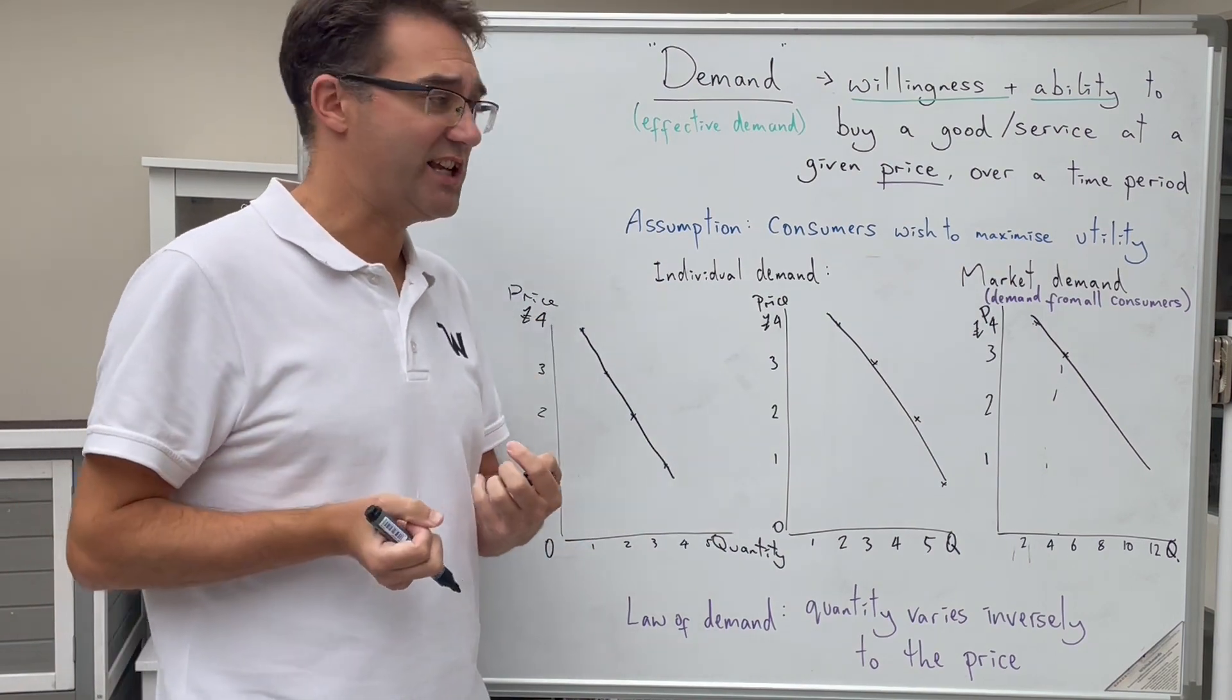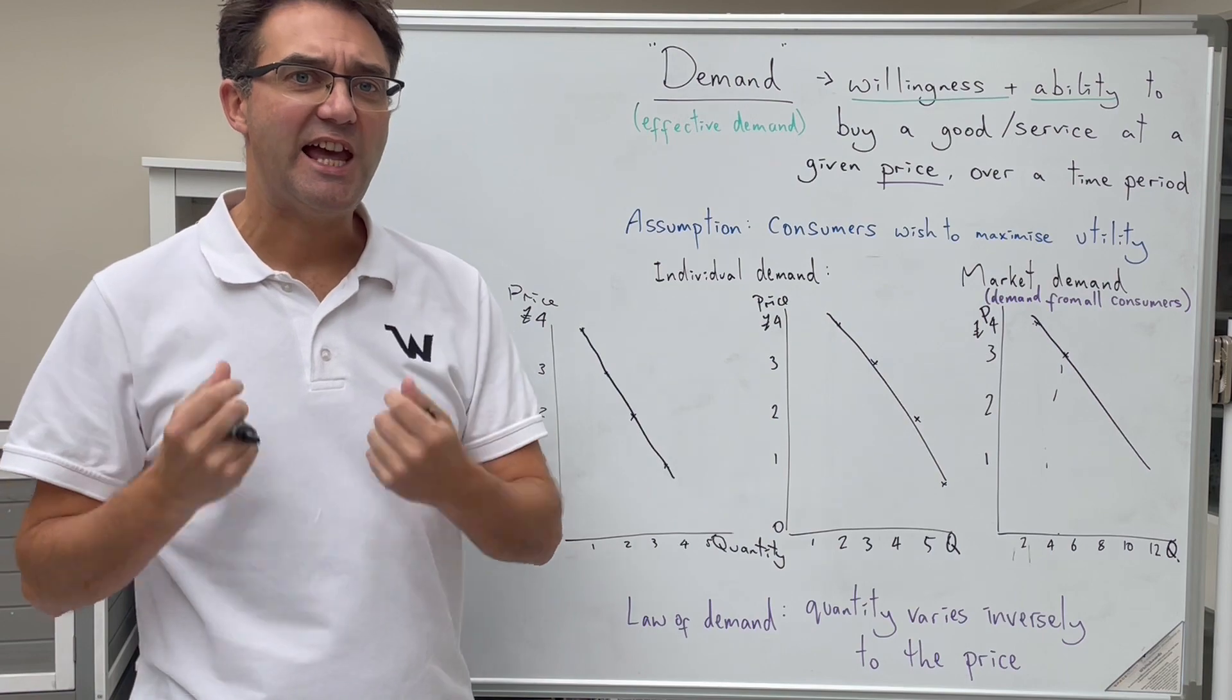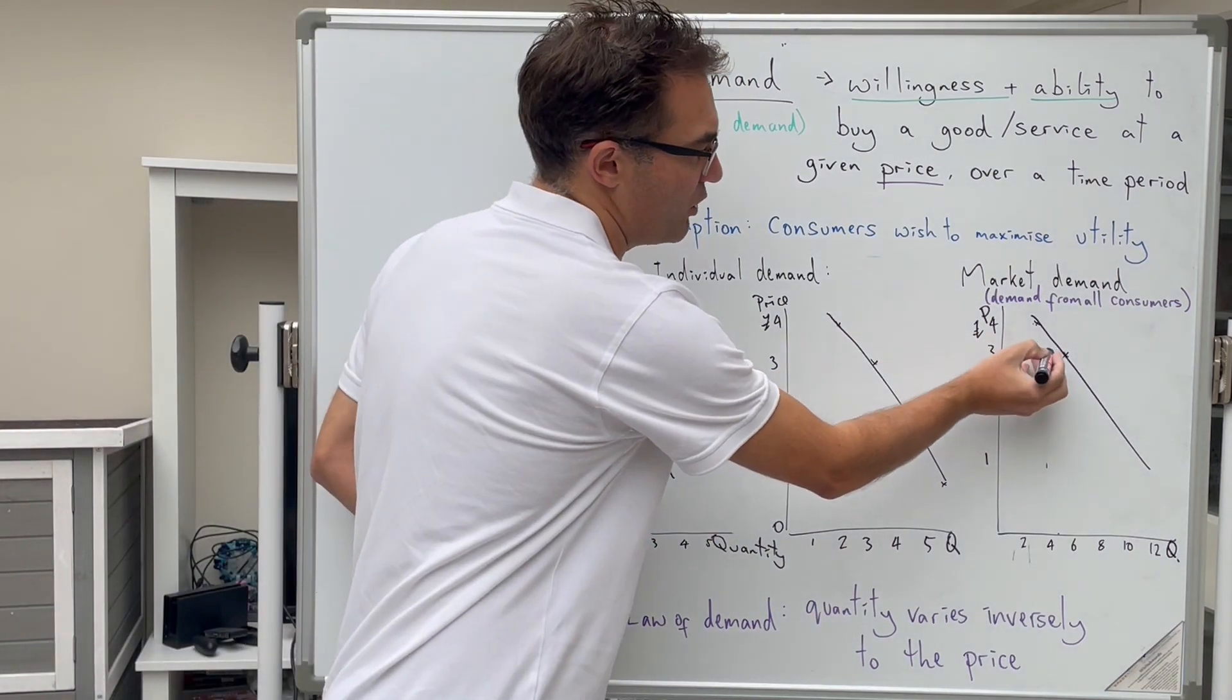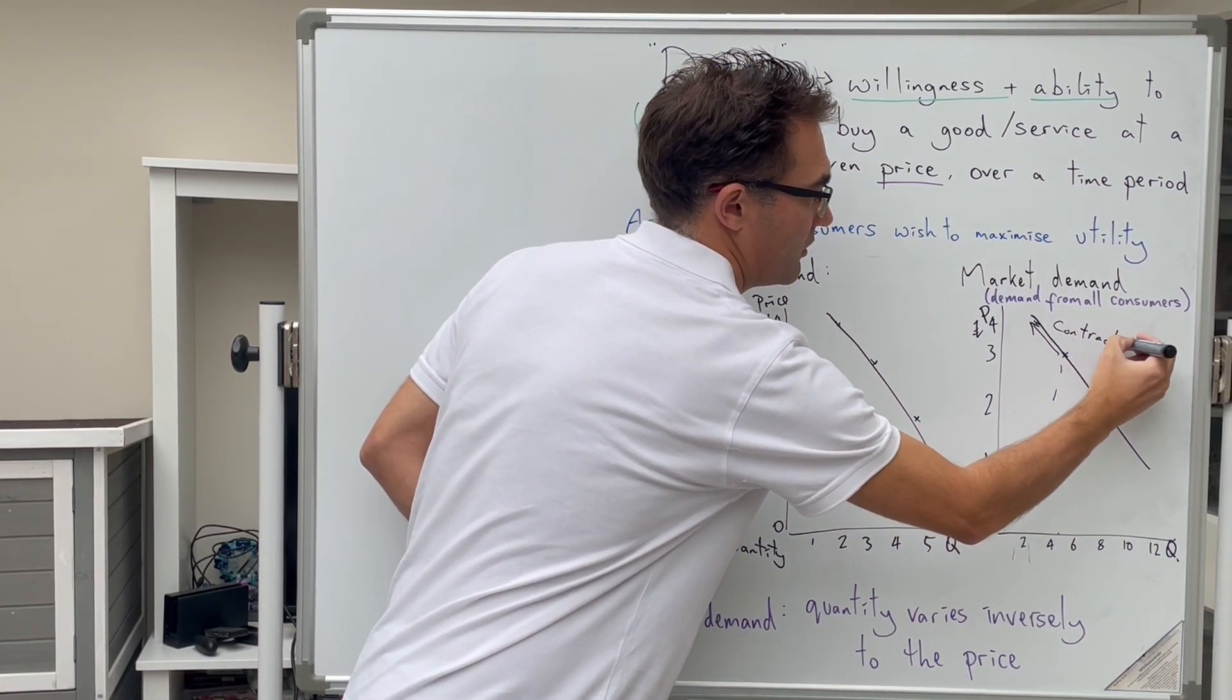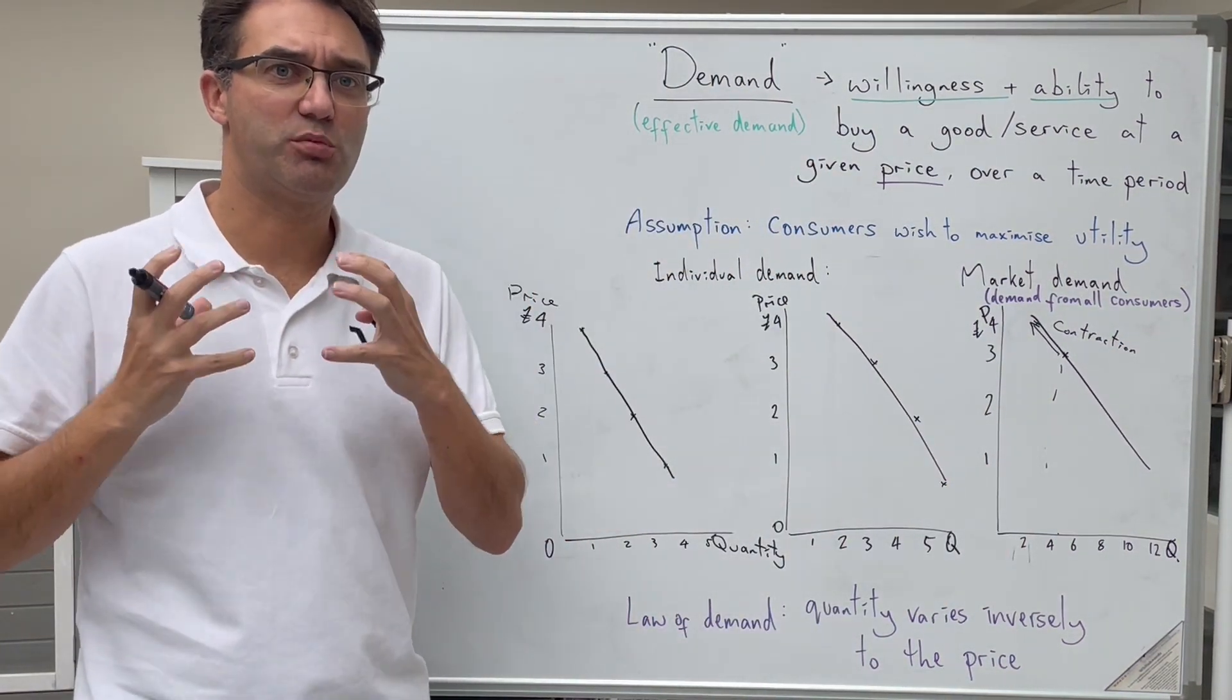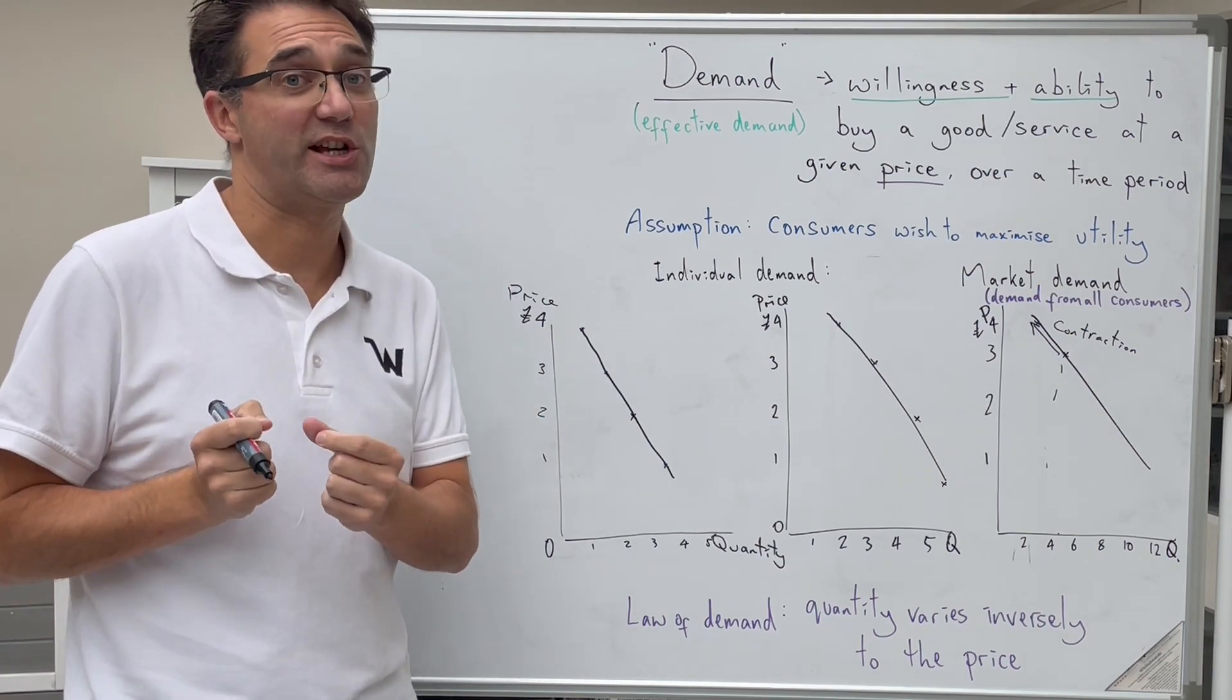If we're starting at a price here of three pounds and we're buying five in the market, if the price increases, then what will happen? Higher price, people are less willing and able to buy that good or service. So here we move up to this point here and we call this a contraction. Demand has contracted. It has got smaller in that market or that is what would happen if the price was to rise.